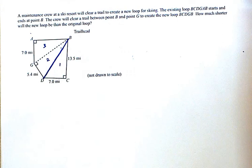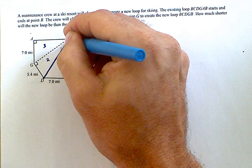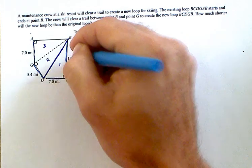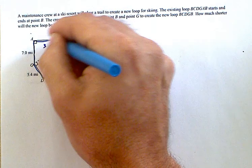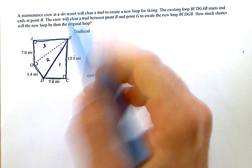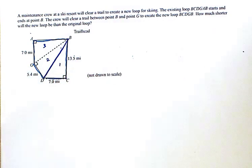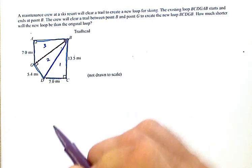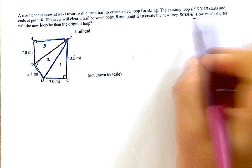So basically what's happening originally, the person went around all, let's say one, two, three, four, five sides. That's what this question is. And the crew will clear a trail between point B and G to create some sort of shortcut. So now you can actually take this hike this direction here. And they want to know how much shorter will the new loop.